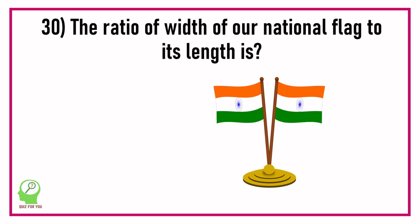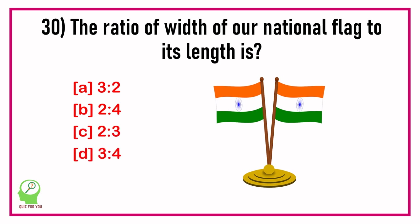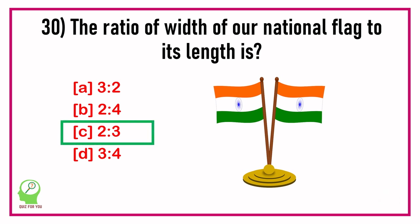Question number thirty: The ratio of width of a national flag to its length is which of the following? Options are: 3:2, 2:4, 2:3, 3:4. Answer: 2:3.